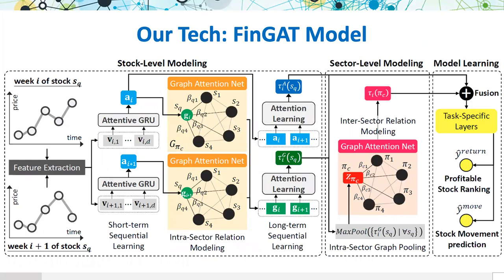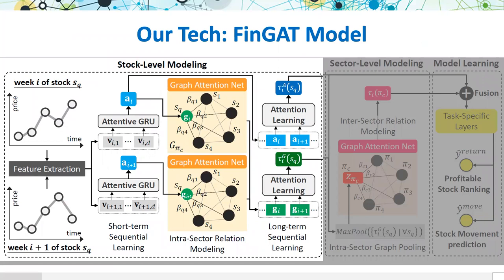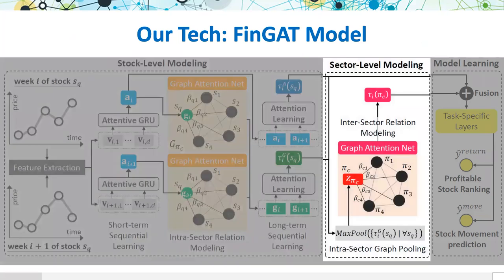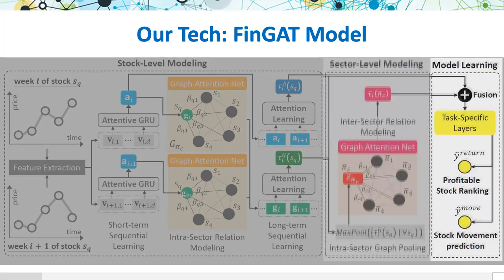This is a quick overview of our proposed FinGET algorithm, which involves three key features. First, we design a stock-level modeling that captures long- and short-term features from time series and utilizes graph neural networks to learn the intra-sector relation. Second, a sector-level modeling is applied by aggregating individual stocks from each sector as a hypernode, and afterwards learns the inter-sector relation between different sectors. Third, a dual-task learning framework is used to jointly optimize the relative order of ranking between stocks as well as the stock movement prediction.